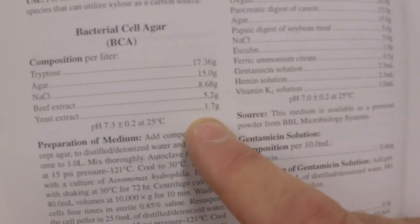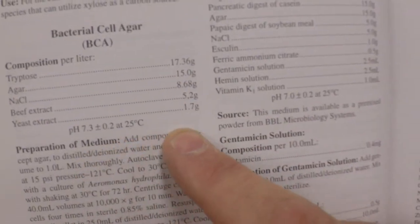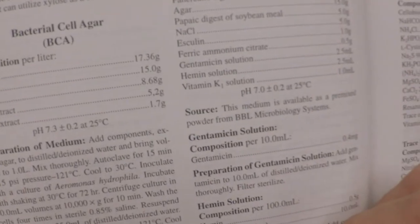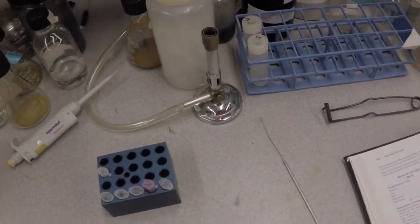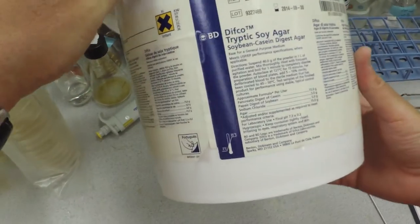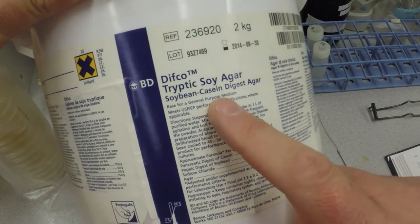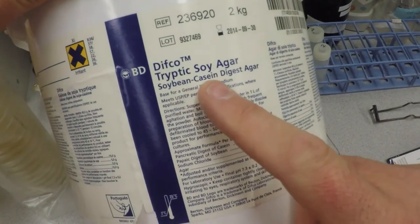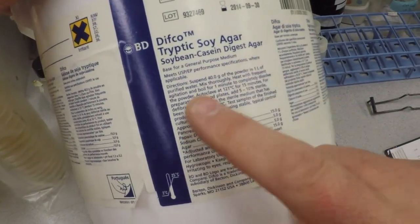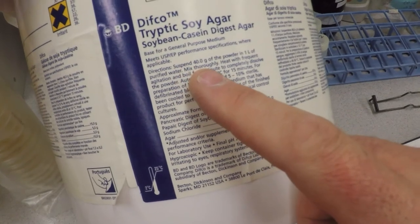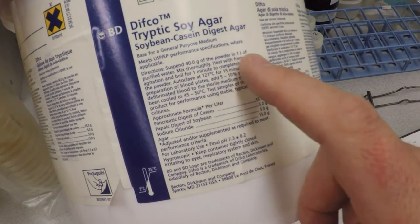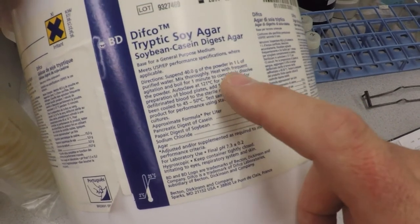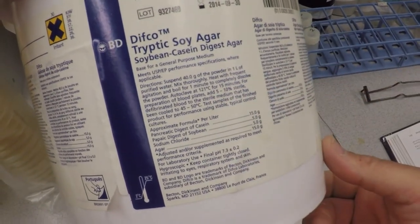Let's go over and look at tryptic soy. Take a little stroll over here. Here it is. It says tryptic soy agar—soybean casein digest agar. If you read these little directions, it'll tell you what to add and how much. It says 40 grams of this powder into a liter of water, mix it, autoclave and sterilize it.